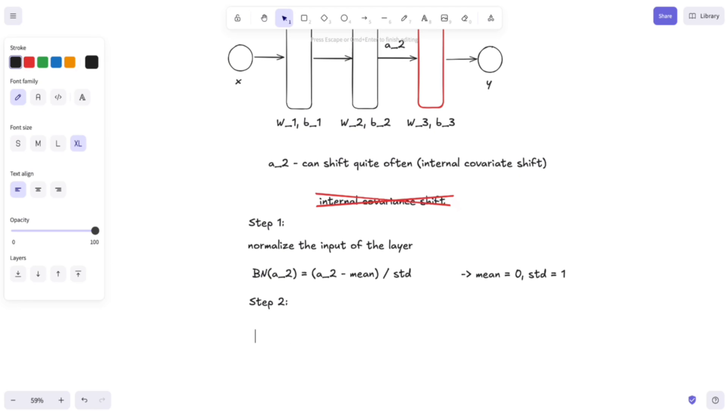So, the next step in the batch normalization layer, step two, is to multiply this output. And actually I should rename this to only norm here, because this isn't actually the whole batch normalization layer. So the batch normalization will be equal to gamma multiplied with the output of the first step, norm of A2, and then we add the parameter beta.